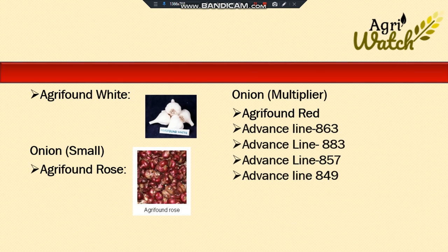The next one is Agri Found Rose. It is a small onion. The bulbs are flattish, round in shape, deep scarlet red in color. It will mature by 90 to 110 days from sowing. The size will be 2.5 to 3.5 cm. It is also a pickling type. It is recommended for growing in kharif in Andhra Pradesh and in all three seasons in Karnataka.